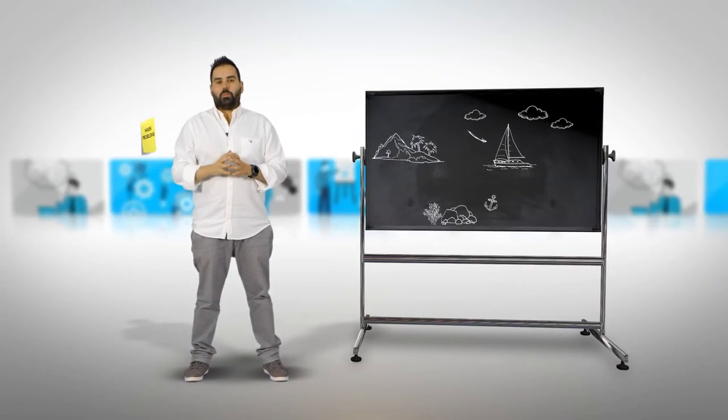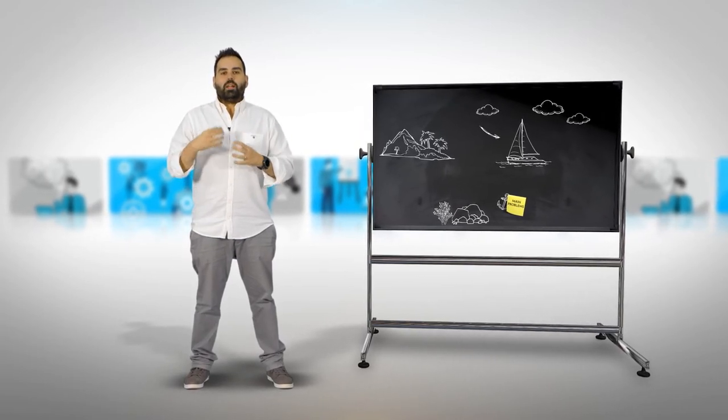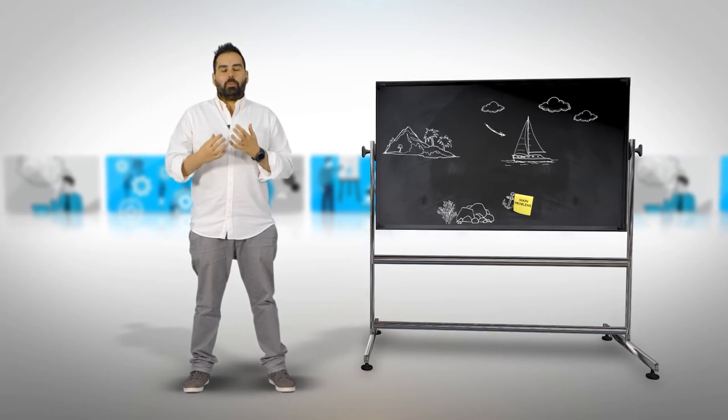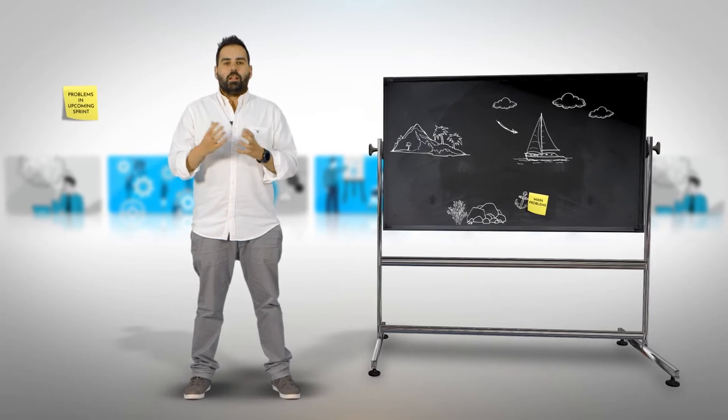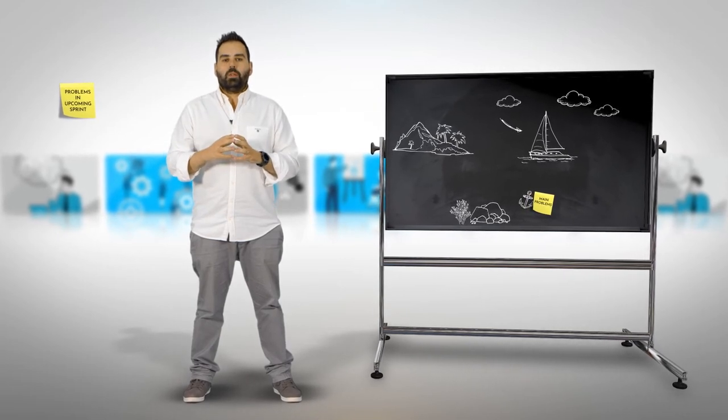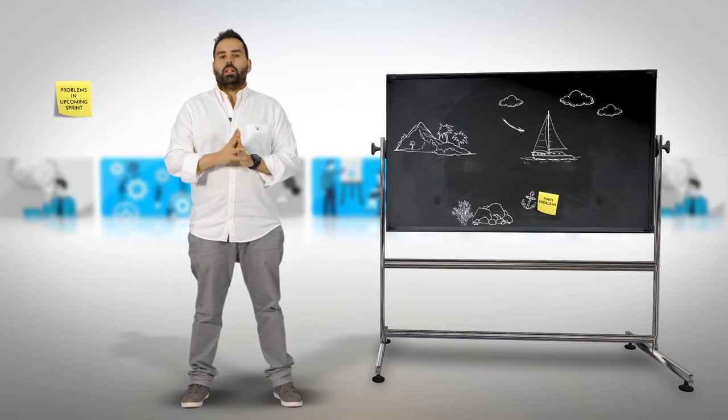Then you ask the team to basically think about what are the problems that did not pop up but most probably will pop up within the upcoming sprint. So what are the things that will most probably, if they happen, crash the boat? Ask them to list all the problems and post the post-its on the rocks beneath the surface.